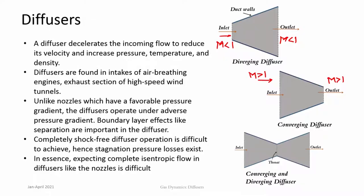Similar to CD nozzles, a convergent-divergent diffuser has a minimum area at the throat. The inlet is supersonic (M > 1) and the outlet is subsonic (M < 1). Unlike nozzles, which operate with continuously reducing pressure — a favorable pressure gradient — this gradient accelerates the flow. In the context of viscous effects, favorable pressure gradients are good for boundary layers near the wall because they do not disturb them much.